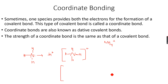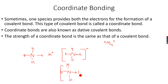The correct way to represent a coordinate bond is like this. All of this will remain the same because it was part of the ammonia, but we will make an arrow to show that it was nitrogen that gave both the electrons. So that's how we correctly represent the coordinate bond. The ammonium ion will have a tetrahedral shape because there are 4 bonding pairs and 0 lone pairs.